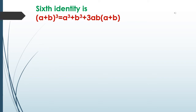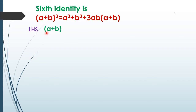First we will see how to derive the formula, then you can easily remember this identity. Starting with the LHS, (a + b)³, we can write it as (a + b) × (a + b) × (a + b).